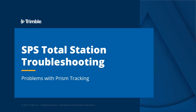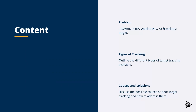This short video on SPS Total Station troubleshooting is going to talk about problems with prism tracking. First we'll cover the problem — the instrument not locking onto or tracking a target or the correct target. Then we'll talk about the types of tracking available, because this will be important with the following discussion, and then the causes and solutions available when we're not tracking our target correctly.